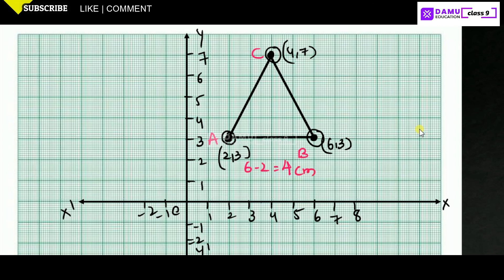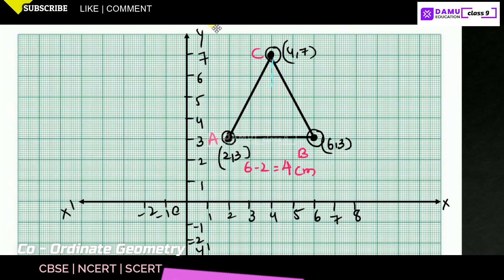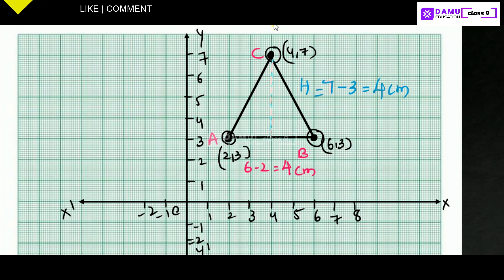Now the height: this is the height of the triangle. The height equals 7 minus 3, which is 4. So the height is also 4 centimeters, and the base is also 4 centimeters. We can count: 1, 2, 3, 4 — that is 4 centimeters for the height.